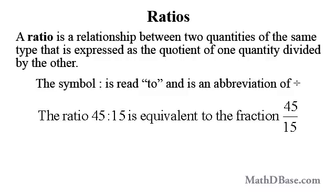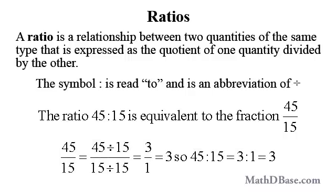The ratio 45 to 15 represents the fraction 45 over 15. Since ratios can be represented by fractions, they can be manipulated as fractions. The numerator and denominator can both be divided by 15: 45 over 15 equals 45÷15 over 15÷15, which simplifies to 3 over 1, or just 3. So the ratio 45 to 15 equals 3.